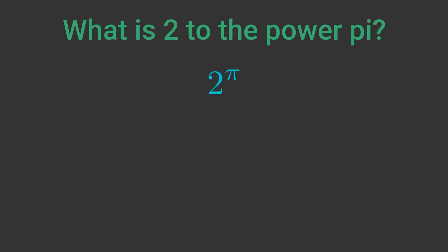How can we find the value of a to the power x where x is an irrational number? For example, what is 2 to the power π?